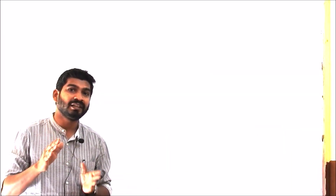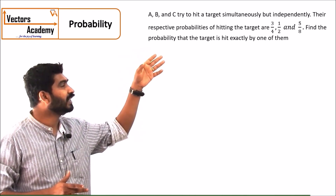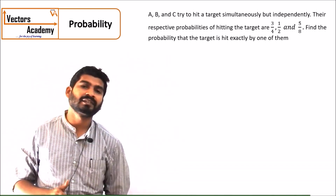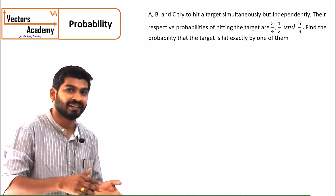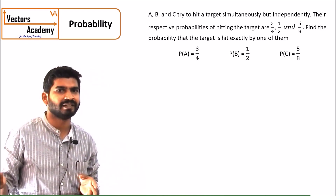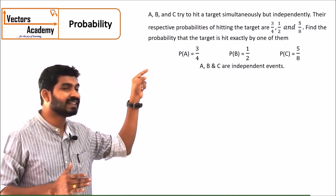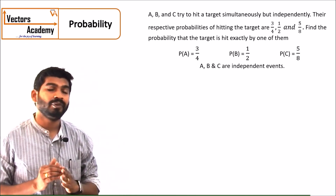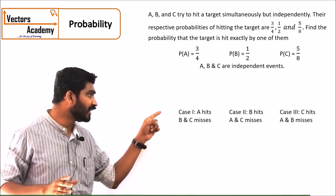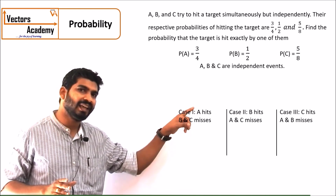Now we will look at an example where events are independent. The probability of A, B and C hitting the target is 3 by 4, 1 by 2, and 5 by 8. If A hits the target, it does not affect whether B hits or misses, so these are independent events. The question asks for the probability that exactly one person hits the target. There are 3 cases: A hits and B and C miss; B hits and A and C miss; C hits and A and B miss.